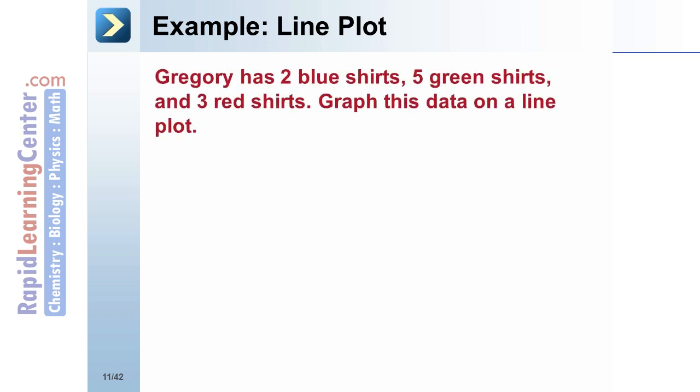Example: Gregory has 2 blue shirts, 5 green shirts, and 3 red shirts. Graph this data on a line plot.